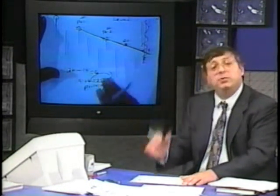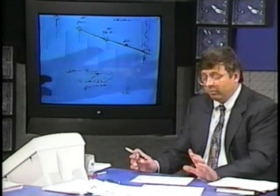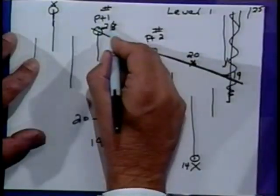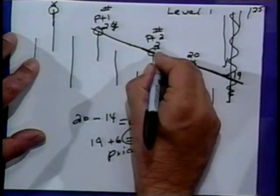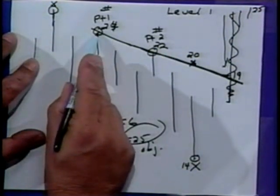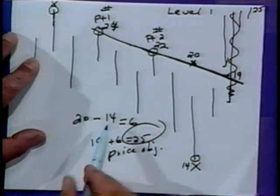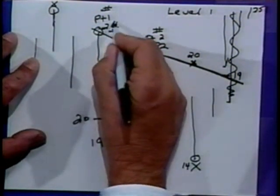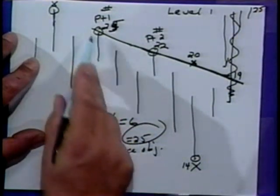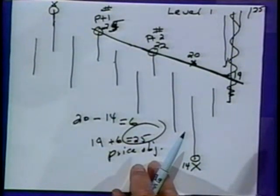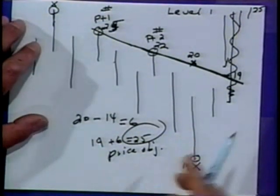You can reverse this approach. This is called a TD supply line. You can also do it in an uptrend and call it a TD demand line. As a quick example: say this price here is 24, and this price here on that particular point is 22. A period of three days between these two points has transpired.